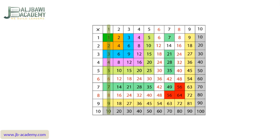Now let's go to the multiplication table of 2. It is also a very easy multiplication table because if you multiply any number by 2, it is the same as adding that number to itself. If you multiply 6 by 2, it means 6 plus 6 equals 12. If you multiply 5 by 2, it means 5 plus 5 equals 10. If you multiply 7 by 2, it equals 7 plus 7 equals 14. So the multiplication table of 2 is also very easy and we can cross it.